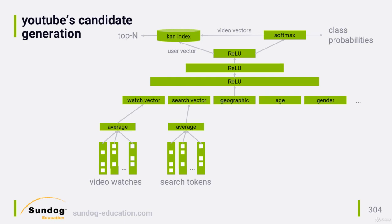YouTube was kind enough to publish their deep learning architecture, at least as it was in 2016. It's interesting that although YouTube has explicit ratings in the form of thumbs up and thumbs down ratings, they don't use them at all for generating recommendations because that data is too sparse.